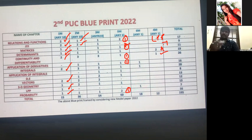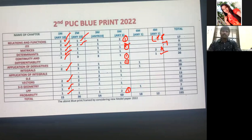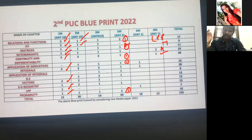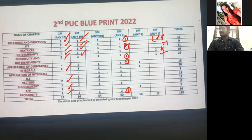For Matrices two-mark questions: find the value of x and y given x plus y or x minus 3 type questions, or x into some matrix plus y into some matrix, find x and y. For Determinants, the standard question is area of triangle — find area of triangle, or given area find the k value where two values of k will come, or find the equation of line joining two points.